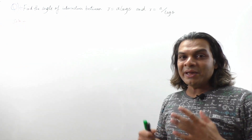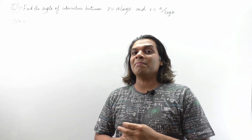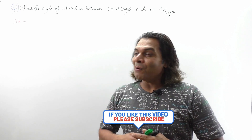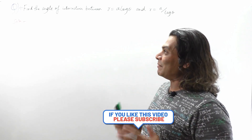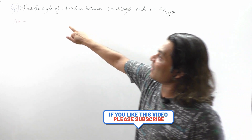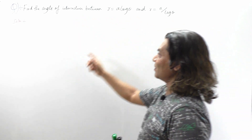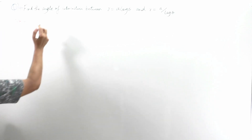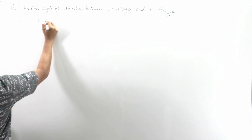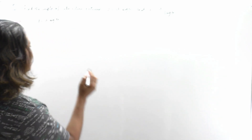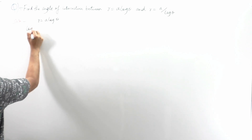The last question is very, very important — it has been asked a number of times in the final examination. The question is: find the angle of intersection between r = a·logθ and r = a/logθ. As usual, we always apply log on both sides.